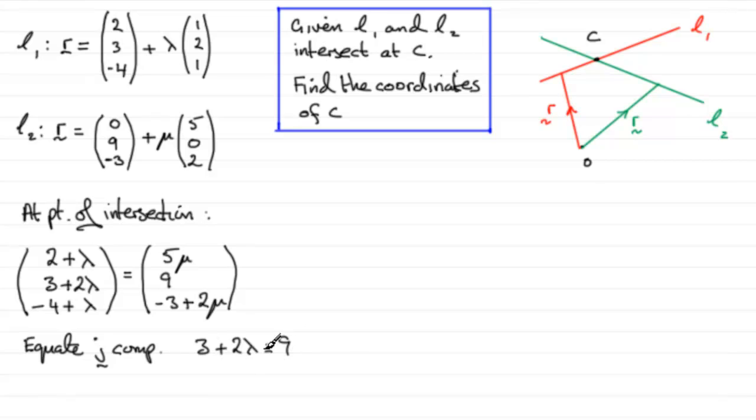And from that, if I take three from both sides, I get that two lambda equals six, and if I divide both sides by two, lambda equals three. So, now I have my value for lambda, and I can substitute it into the equation for line L1.